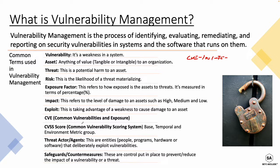CVSS is currently at version 3.1. It uses three different metric groups to produce a score. The base metrics look at exploitability and impact — including impact on confidentiality, availability, and integrity of the system.